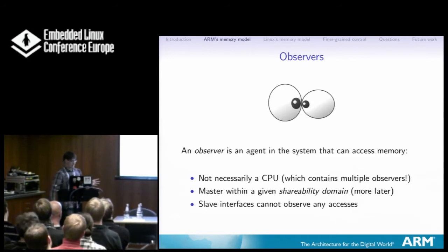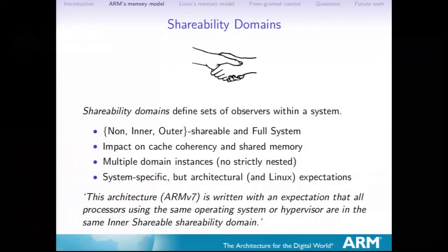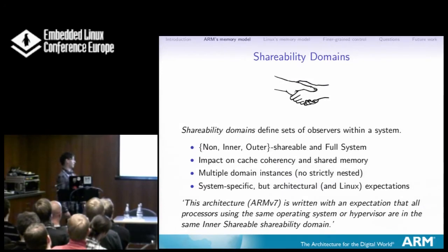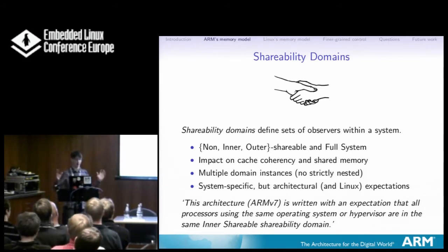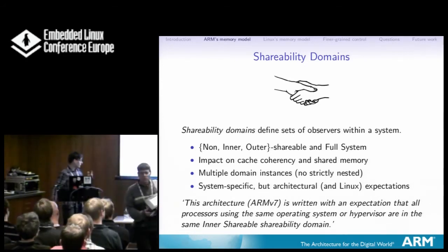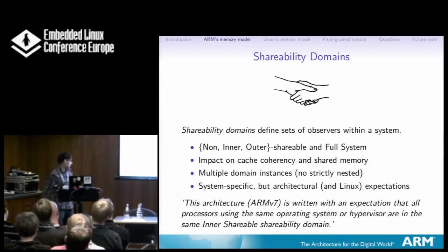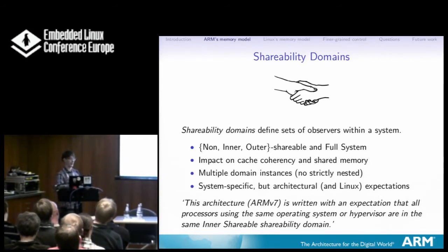Each observer sits in something called a shareability domain — ARM terminology. We have four shareability domains in ARM: non-shareable, inner-shareable, outer-shareable, and full-system. You can use shareability domains to limit the scope of things like cache maintenance, and it's a fundamental part of how your system is integrated. Someone gives you a system and defines how the domains are laid out — you can't change these domains. There are architectural and Linux expectations: ARMv7 is written with an expectation that all processors using the same OS are in the same inner-shareable domain. We really need that because when we do cache cleaning, we broadcast to inner-shareable.